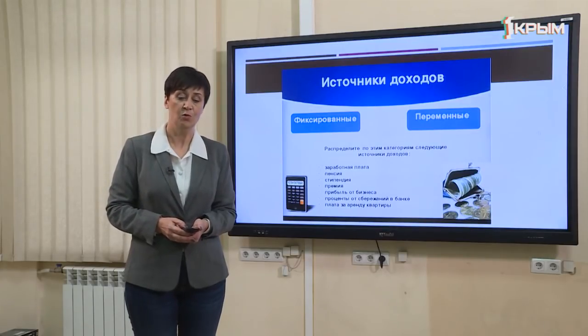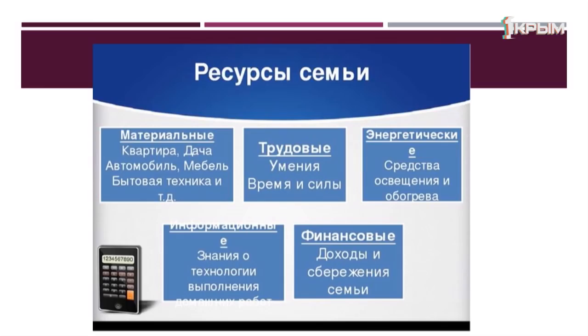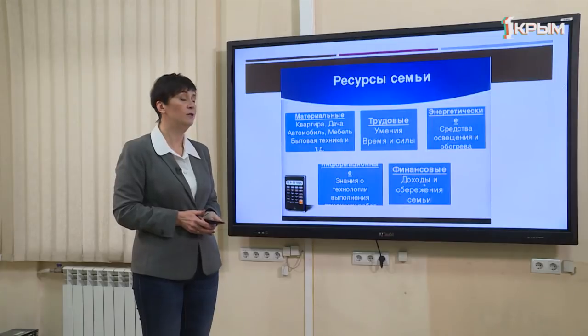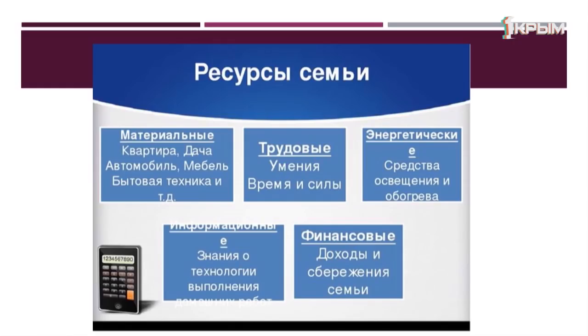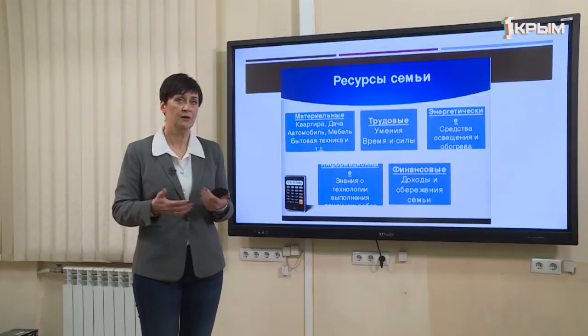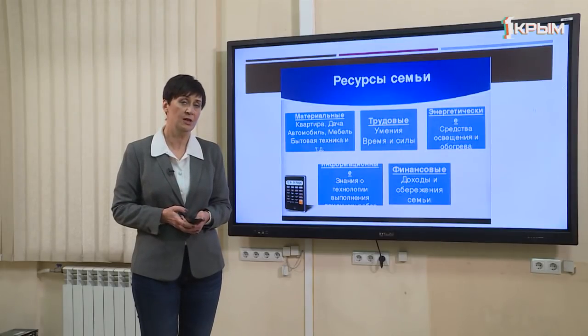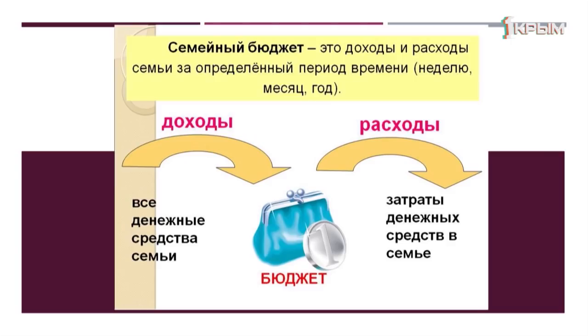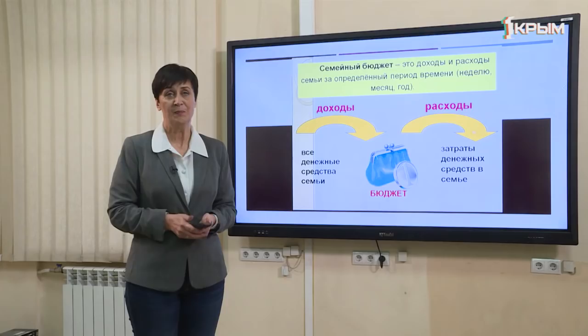Помимо доходов, есть и другие ресурсы семьи, определяющие её благополучие: информационные (знания), трудовые усилия, время, умения членов семьи. Семья может иметь несколько детей и двоих работающих родителей или наоборот. Семья может быть молодой или уже в возрасте — всё это влияет на доходы и имущественное положение. Доходы — лишь один из факторов, ведь есть ещё и расходы.